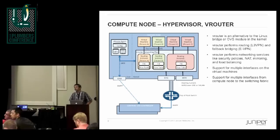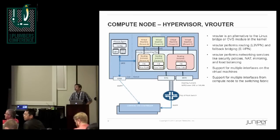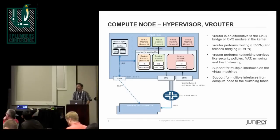Question from audience: I assume that IP tables isn't going to work as it normally does if you have the vRouter module installed? The third bullet point says vRouter performs networking services like security policies, NAT, mirroring, and load balancing — and we already have a lot of those facilities in the kernel, like traffic classification and IP tables for NAT. I assume this short-circuits all of that. Response: Right, it doesn't go through all of those.